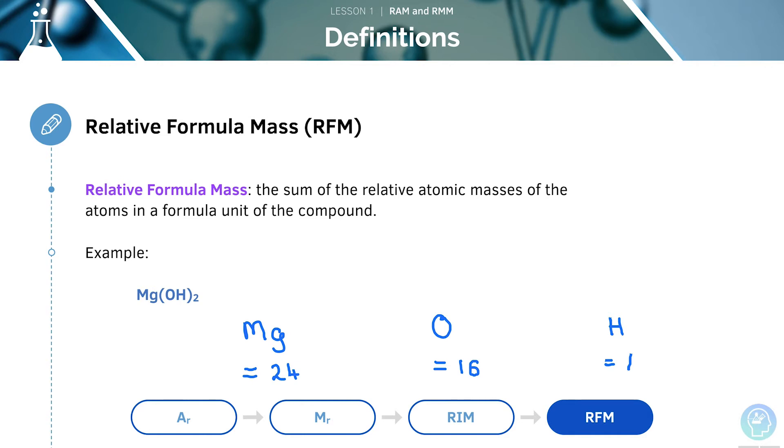Now, we need to look at the amount of atoms. Magnesium, we only have one of, so this will simply be 24. Oxygen, we've got 2, so we need to make this 32. And it's the same for hydrogen.